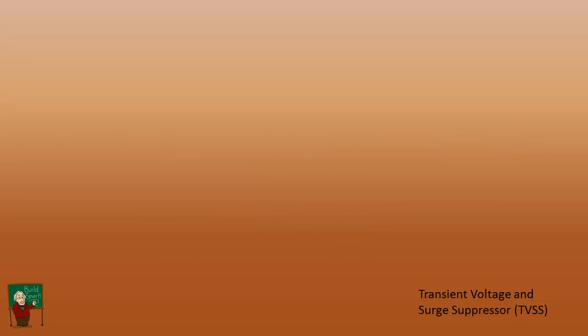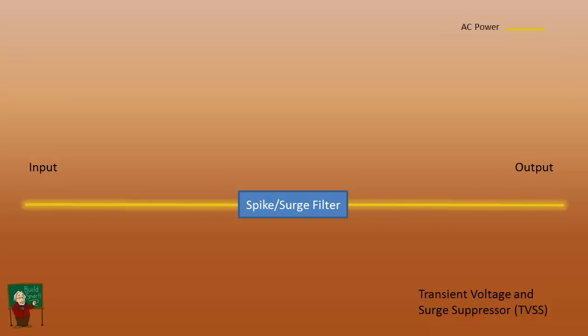Let's start out with the transient voltage and surge suppressor or TVSS. We have basically power in and power out. It operates as a surge protector. You see power on the line, a surge comes in, and this blocks them from passing through.